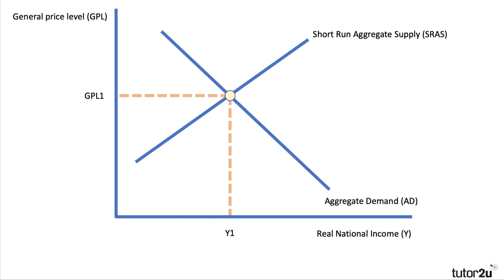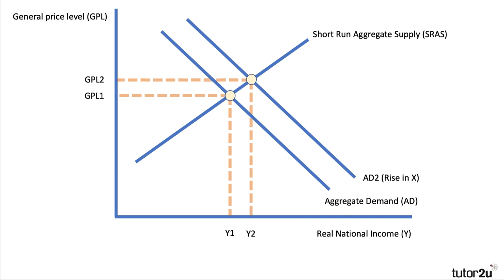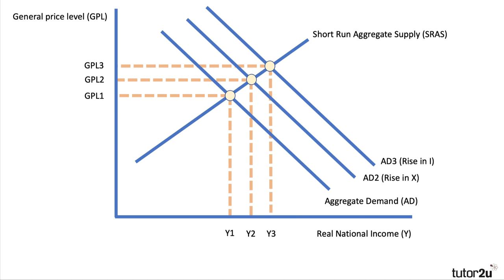Keep things nice and simple with ADAS analysis. A weaker pound could lead to a rise in demand to AD2 — a rise in exports — causing GDP to rise. Conceivably there could also be an increase in investment if a weaker pound stimulates greater domestic production and higher profits, causing an accelerator effect. So the AD curve could shift further out to AD3, reflecting a rise in investment as well.